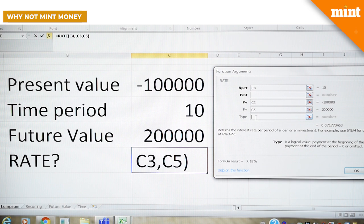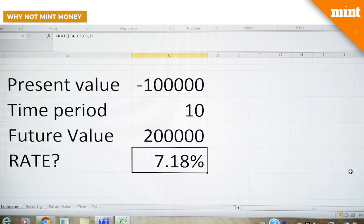Here you go. And Type is whether the investments are made in the beginning or at the end of a year. One is to indicate that the investments were made in the beginning. You press OK and the return is 7.18.